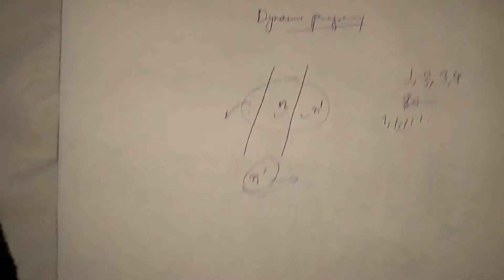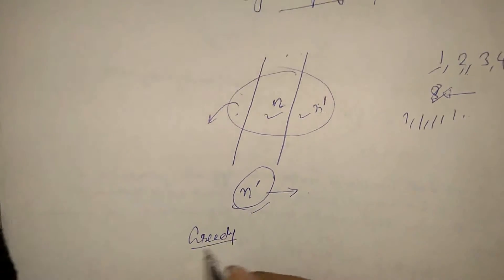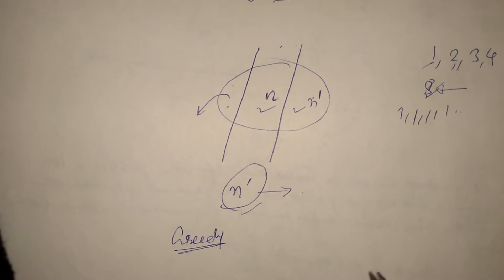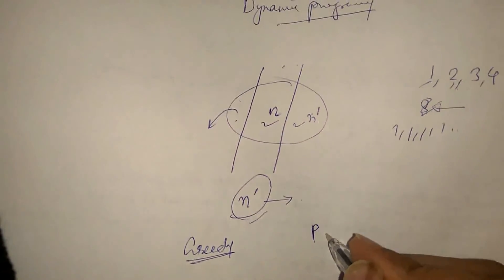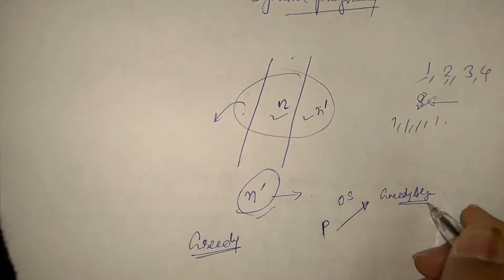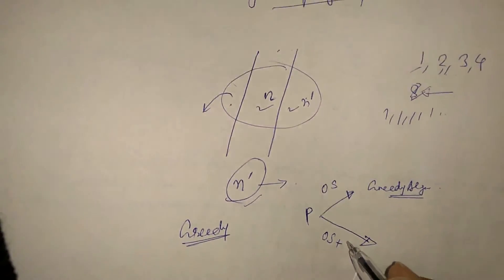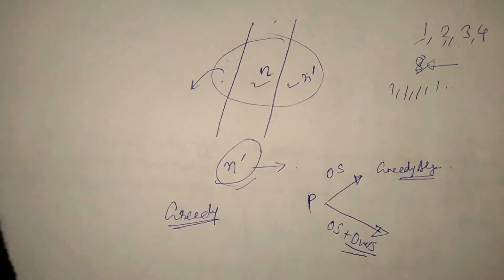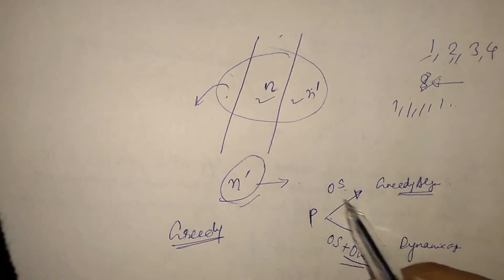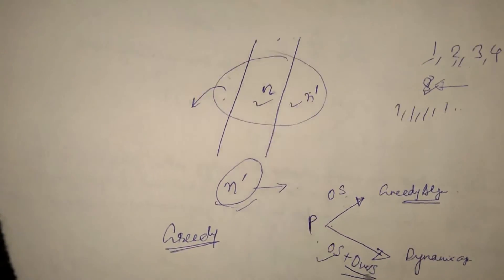Now, consider the greedy algorithm — in greedy we compute by looking at the next local benefit. If a problem P has only the optimal substructure property, then a greedy algorithm is beneficial. But if the problem has both optimal substructure and overlapping subproblems, then we should use the dynamic programming approach. So: if a problem has optimal substructure but no overlapping subproblems, use greedy. If it has both optimal substructure and overlapping subproblems, use dynamic programming.